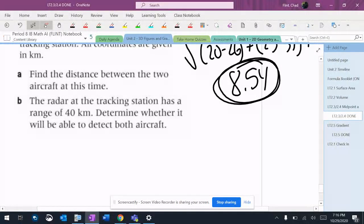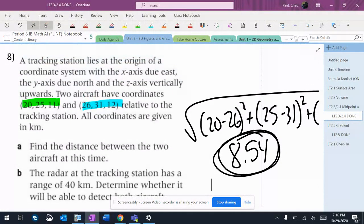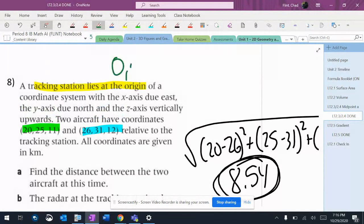Now it says the radar tracking station has a range of 40 kilometers. Determine whether it will be able to detect both aircraft. The station lies at the origin, which is 0,0,0 in three dimensions.